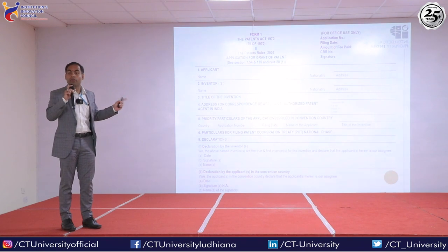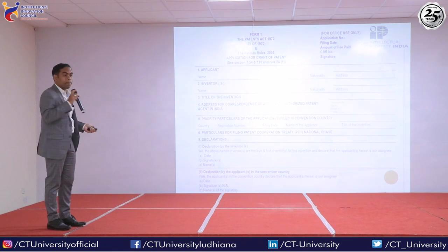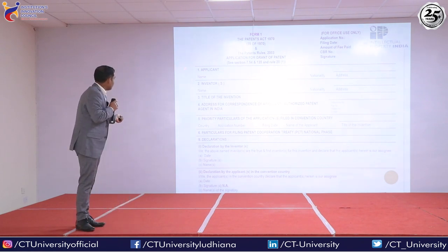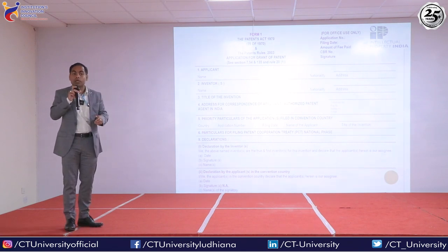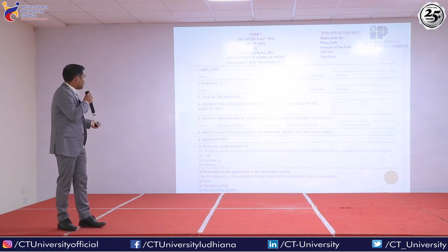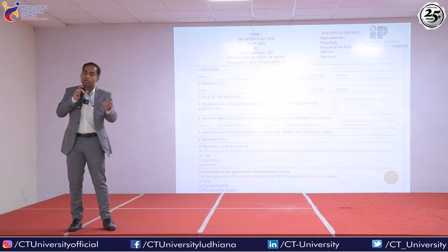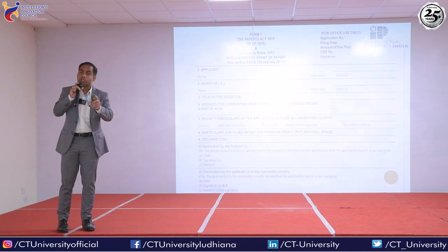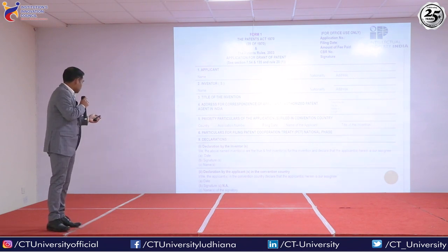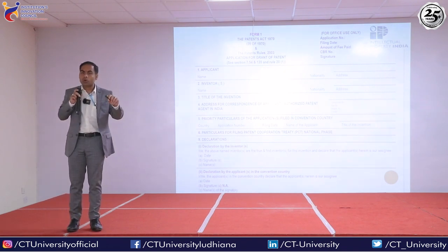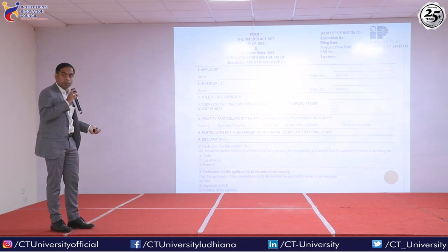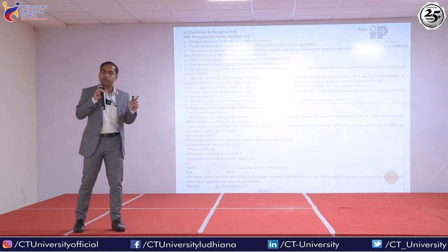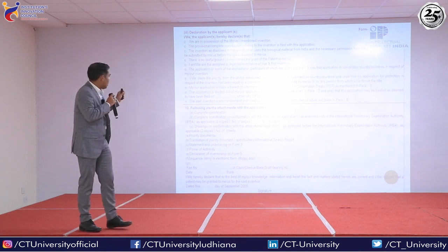Now we will see how to fill Form 1. In Form 1, you need to write the applicant's name. Suppose you are working under City University — City University becomes the applicant. But those people who created the product or invention become the inventors. Suppose four people in a lab develop a product using City University's resources — the applicant will be City University, but the inventors will be persons A, B, C, D. After that, you need to put a title of invention and the address. You also need to pay the requisite fee of 1,600 rupees for patent filing along with Form 1.